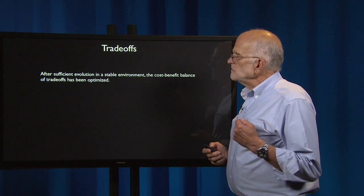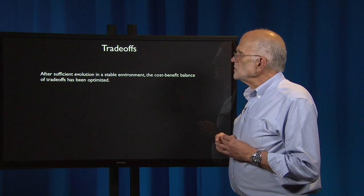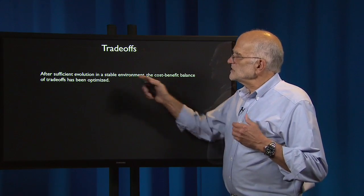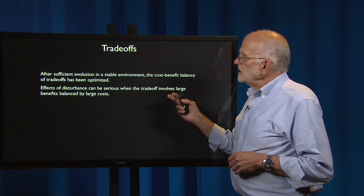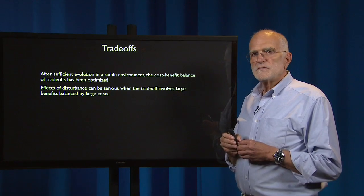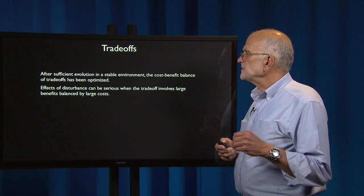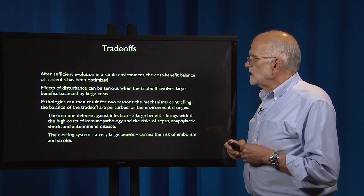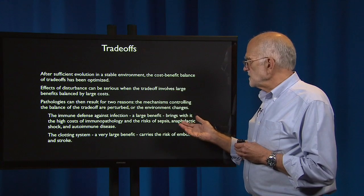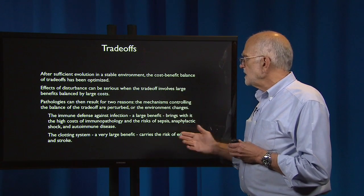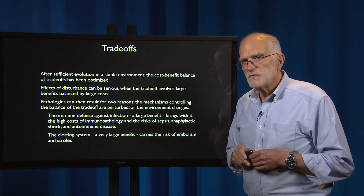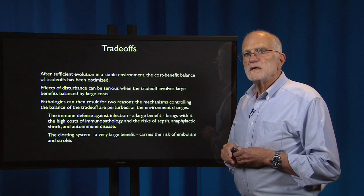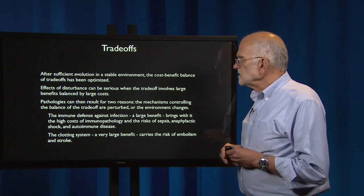Trade-offs are very important. After sufficient evolution in a stable environment, the cost-benefit balance of a trade-off has usually been optimized. However, sufficient evolution in a stable environment is actually a very special case. Effects of disturbance can be serious when the trade-off involves large benefits balanced by large costs, and pathologies can result for two reasons: the mechanisms controlling the balance are perturbed, or the environment changes. For example, immune defense against infection is a large benefit, but it brings high costs of immunopathology and the risks of sepsis, anaphylactic shock, and autoimmune disease. The clotting system is a very large benefit that helps us heal rapidly, but it carries the risk of embolism and stroke.